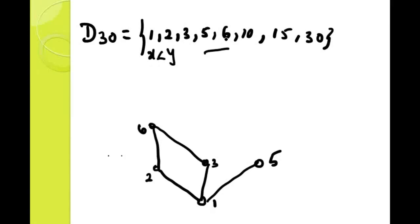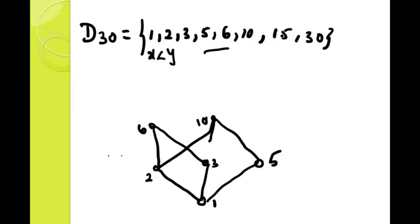For element 10: 6 does not divide 10, going to previous — 5 divides 10. So I fix element 10 here. 2 also divides 10, but connecting 1-2-10 would give a transitive property. For element 15: 10 does not divide 15, 6 does not divide 15, but 5 divides 15. 3 also divides 15, and 1 also divides 15, but connecting 1 to 15 would give the transitive property.